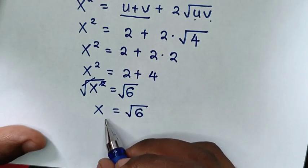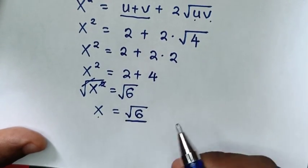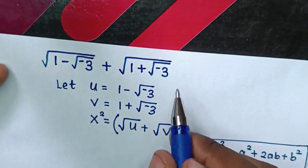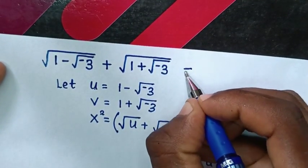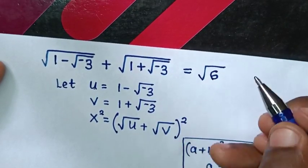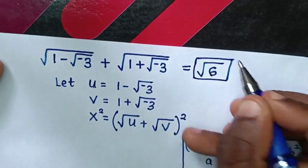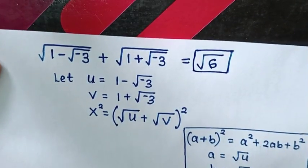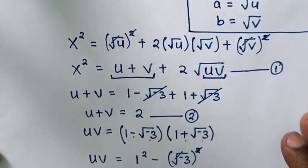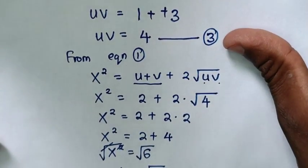Since we let x be equal to the whole original expression, square root of 6 is the simplified form of the whole expression. Therefore the final answer is square root of 6. Thank you for watching. Don't forget to subscribe to my channel and see you in the next video.